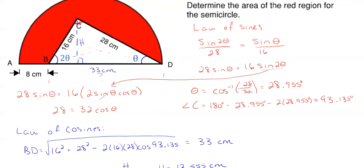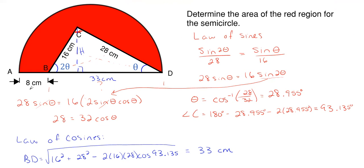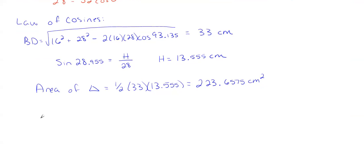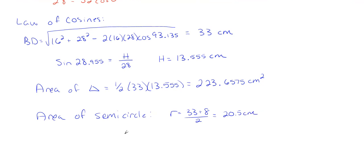Now I need the overall area of the semicircle. The diameter is 33 + 8 = 41, so the radius is 41/2 = 20.5 centimeters. The area of the semicircle is πr²/2 = π × 20.5² / 2, which gives approximately 660.127 centimeters squared.